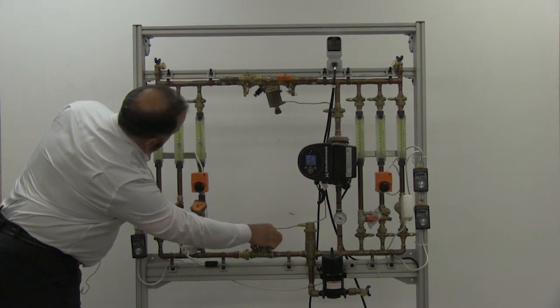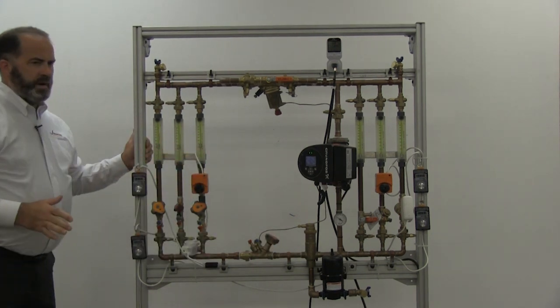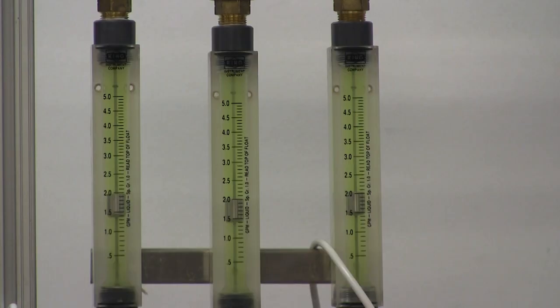Turn the partner valve down. Now all of my coils are at my 2 GPM design flow. Now everything's balanced. I'm flowing what I should. The system's getting the energy it should.